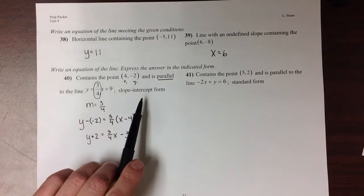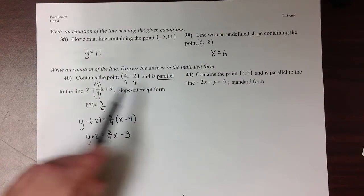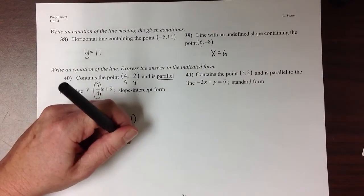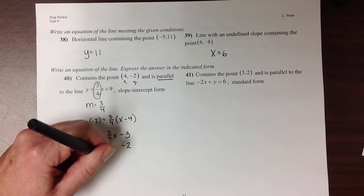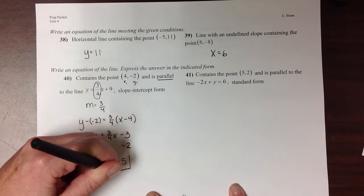Then I just need to look at the final part of the question. They're asking for this to be in slope-intercept form, which means that this 2 needs to go over here and join the 3. So my final answer is y equals 3/4 x minus 5.